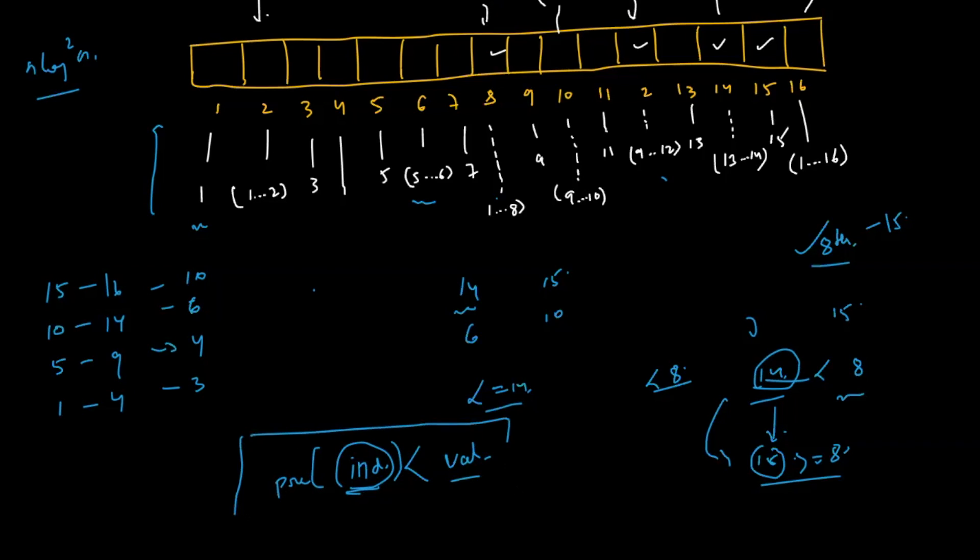Apparently the problem boils down to finding the highest index that gives you the prefix sum which is less than val. After this, the answer will be nothing but index plus 1.